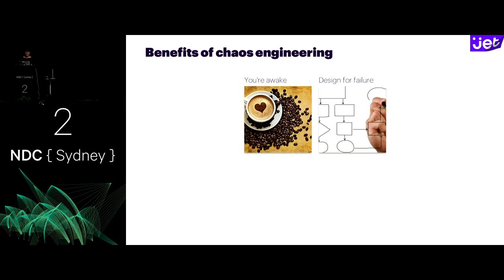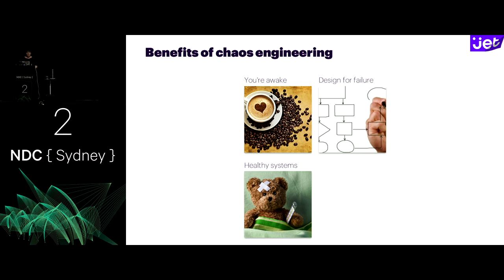We also found that folks start to design for failure. When you know tests will happen in a chaos engineering program, you start thinking: if the service actually goes down, how should we handle that? What should that look like upstream and downstream? So you start thinking ahead and handling all these issues. You also end up with much healthier systems because you're pre-checking for this — preventing a much bigger disaster from happening at 4 a.m. six weeks from now by having a small thing go wrong at 10 a.m. on a Tuesday.